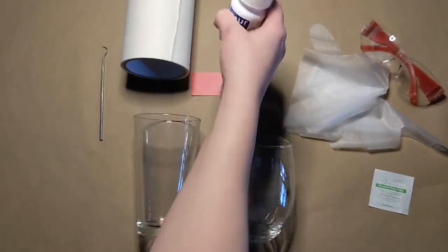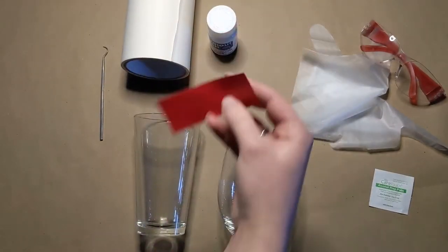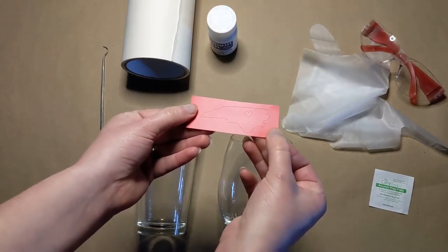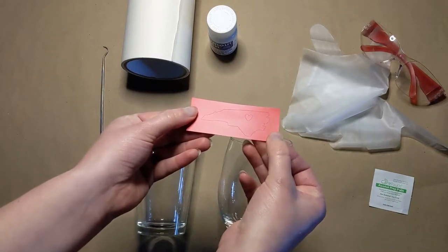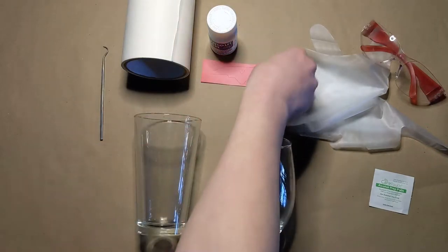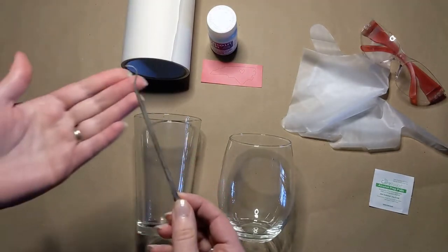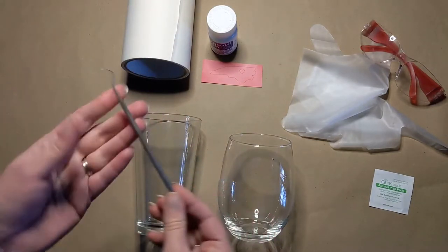We also have a stencil here, and you can kind of see it's just a little outline of North Carolina with a heart. We have transfer paper and we have what we call a weeding tool. It kind of looks like a dentist pick.